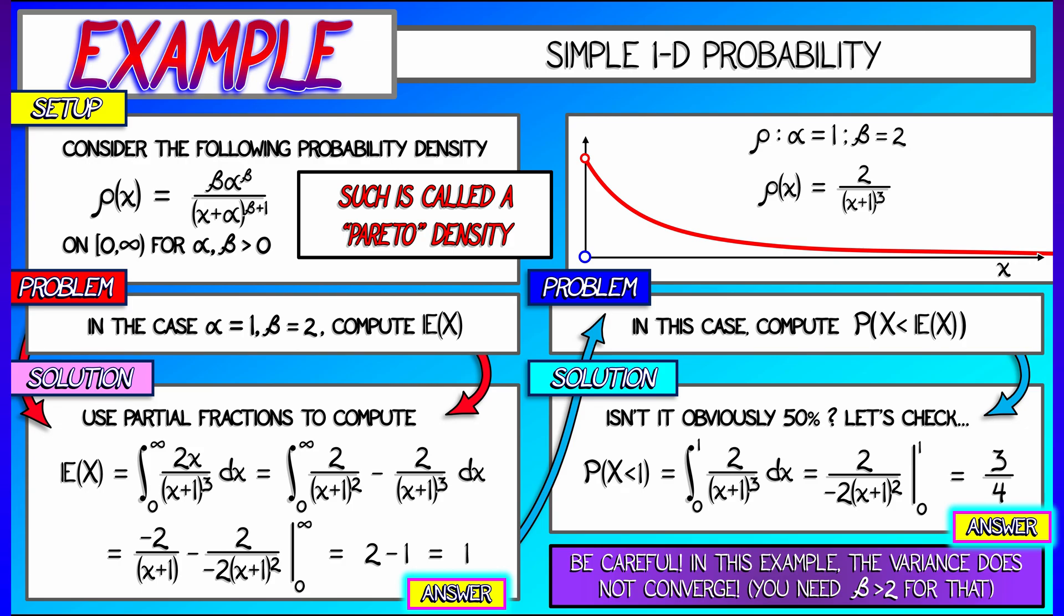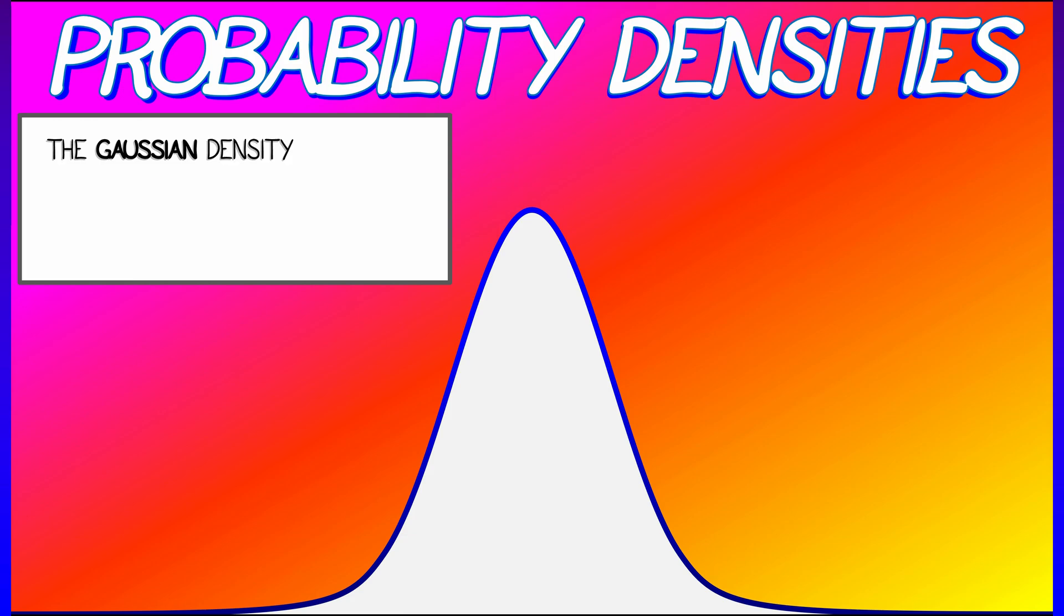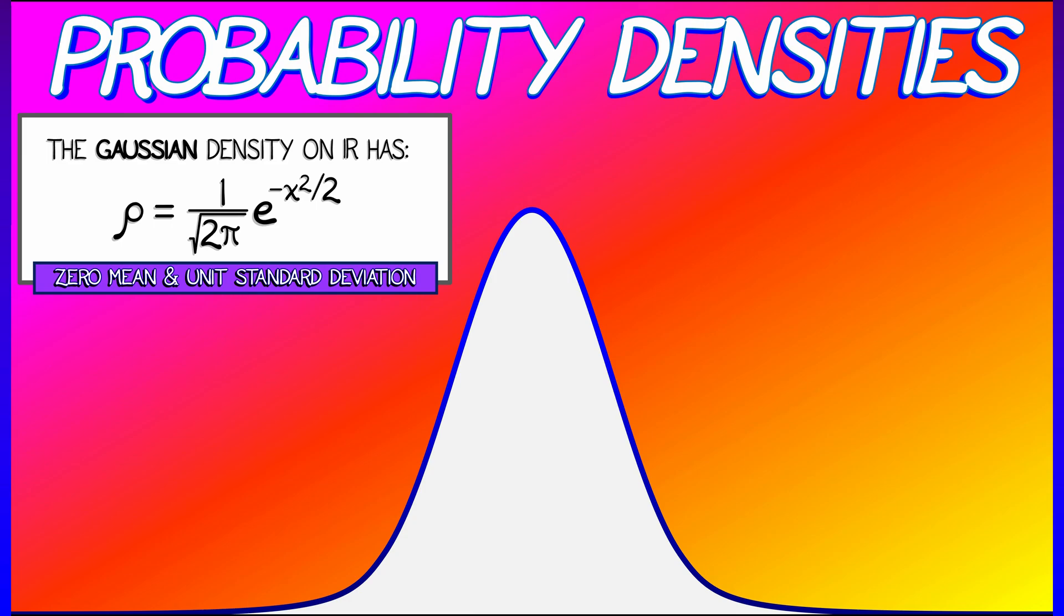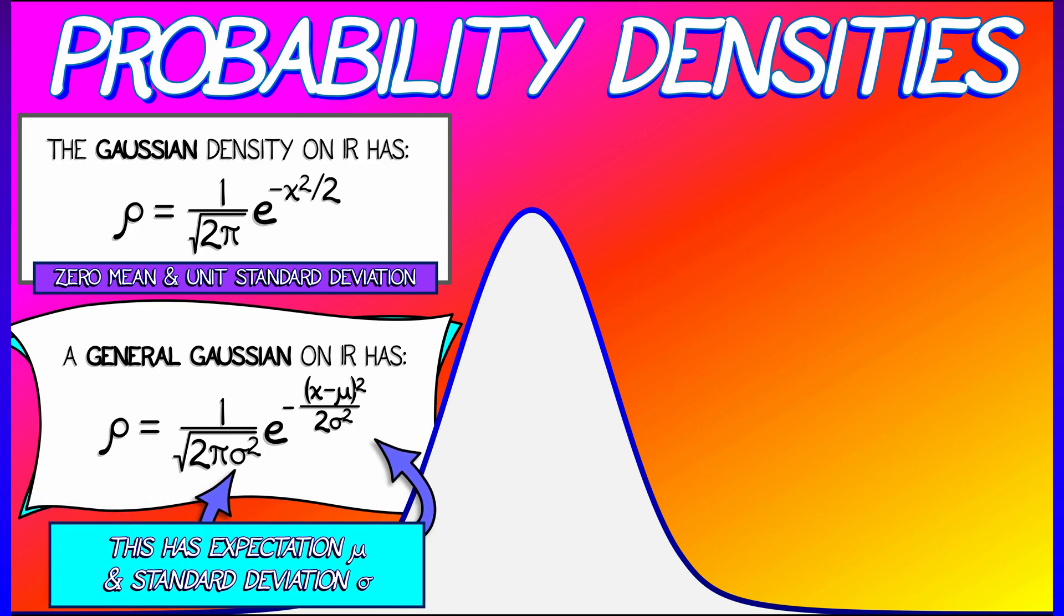Now there are lots of other probability densities out there that are interesting. One of the best, one of the most useful, one of the ones we're going to see all over the place is the Gaussian density. The standard Gaussian on the reals is e to the minus x squared over 2, all divided by root 2 pi. This has mean 0 and standard deviation 1. A general Gaussian on the reals is a bit more complicated. If your mean is mu, your standard deviation sigma, then you take the standard formula, you replace x with quantity x minus mu, and you've got to slip in sigma squared in the denominator of the exponent and the denominator of that coefficient out in front. You may or may not memorize this formula. I don't know.